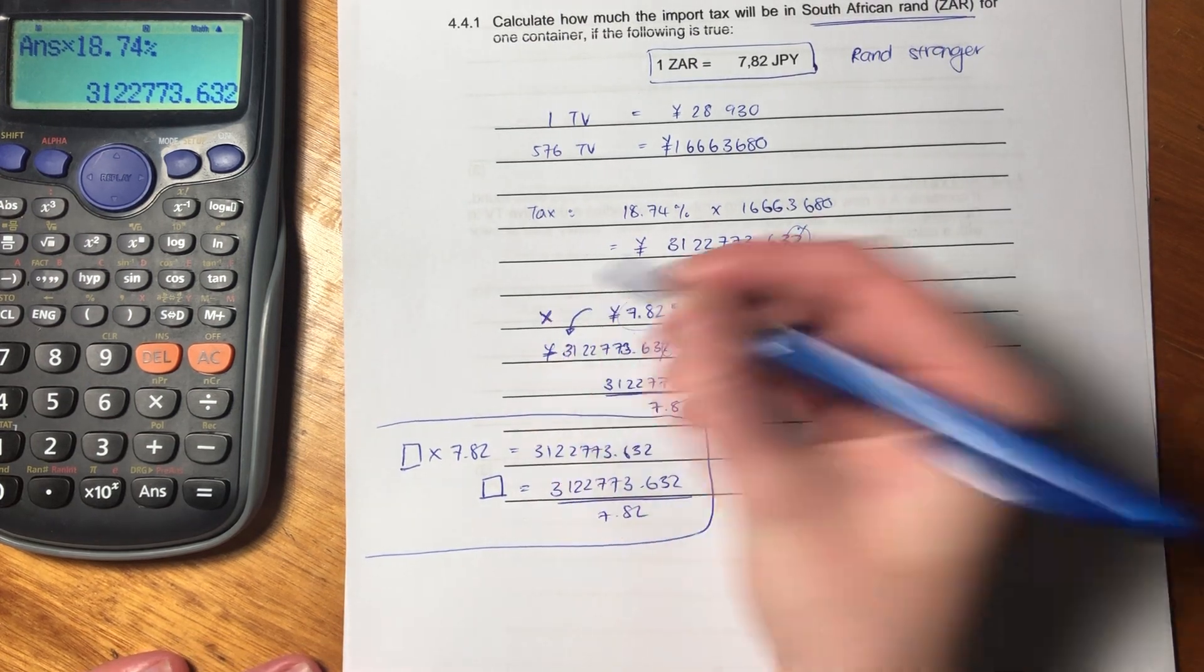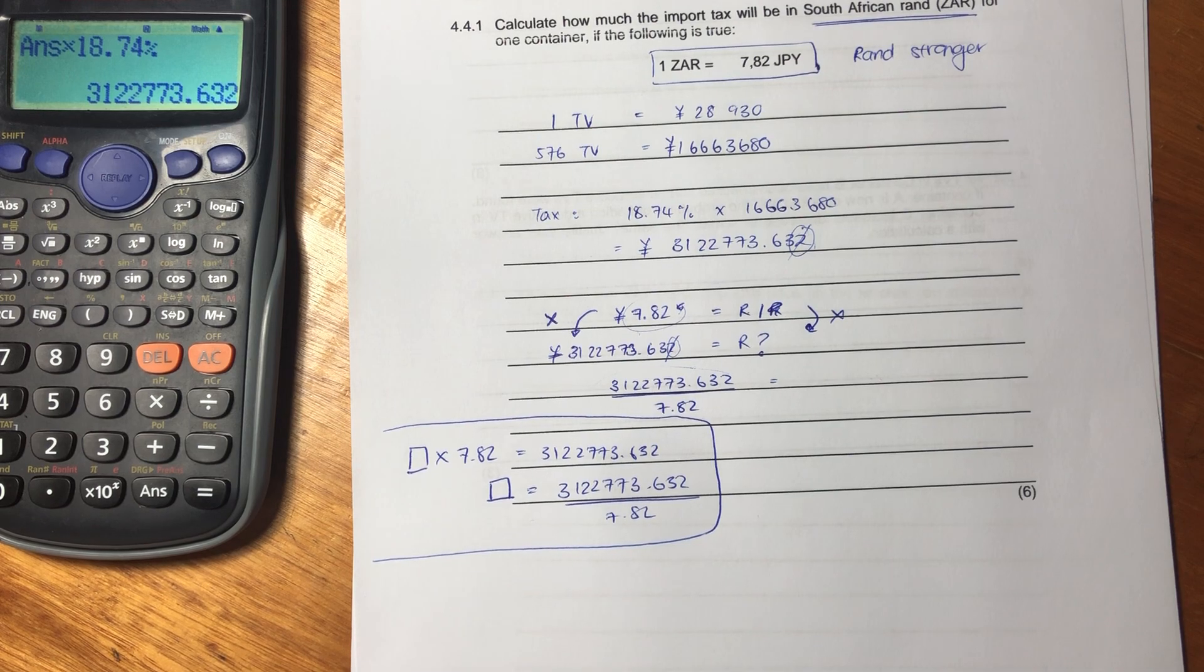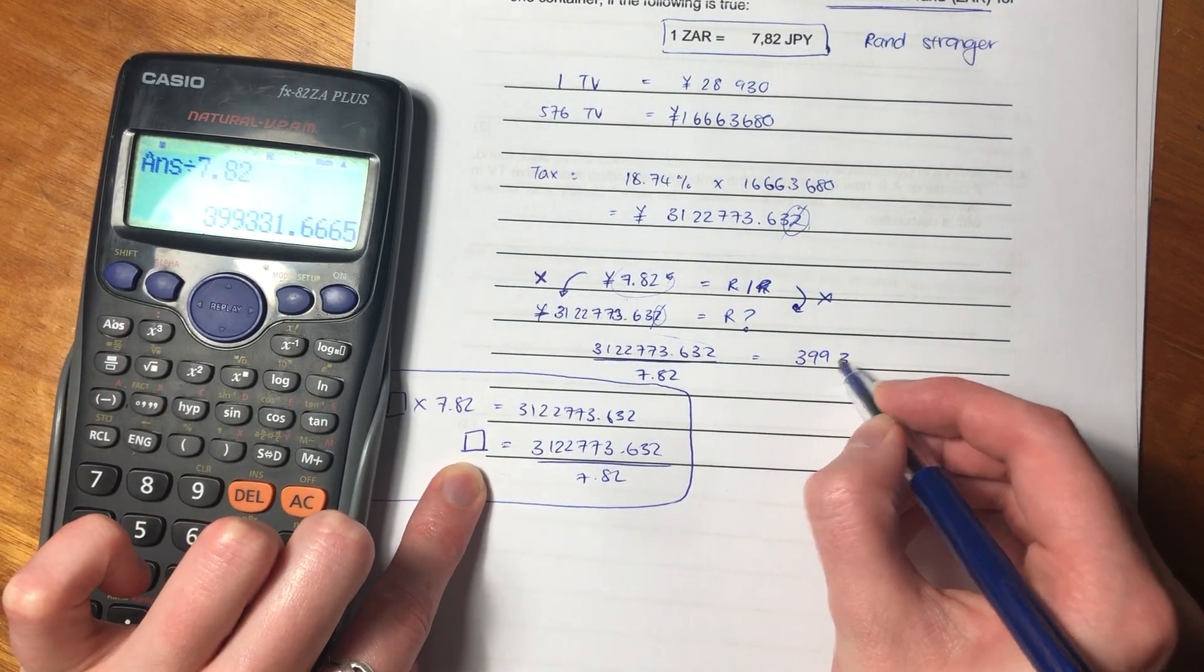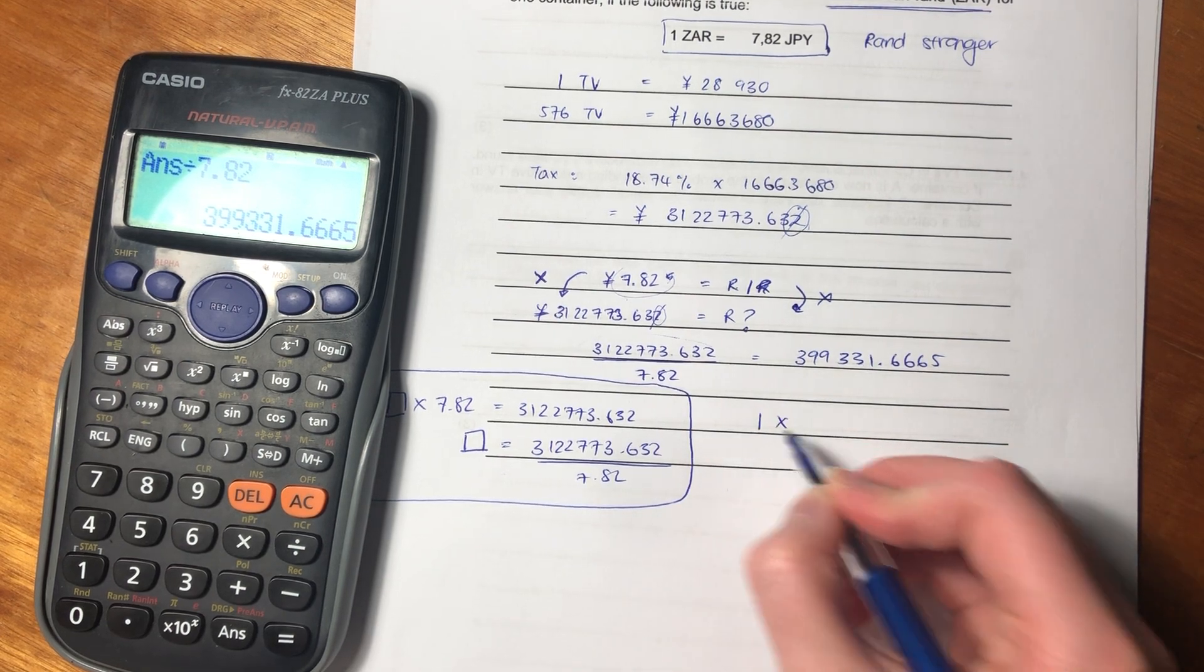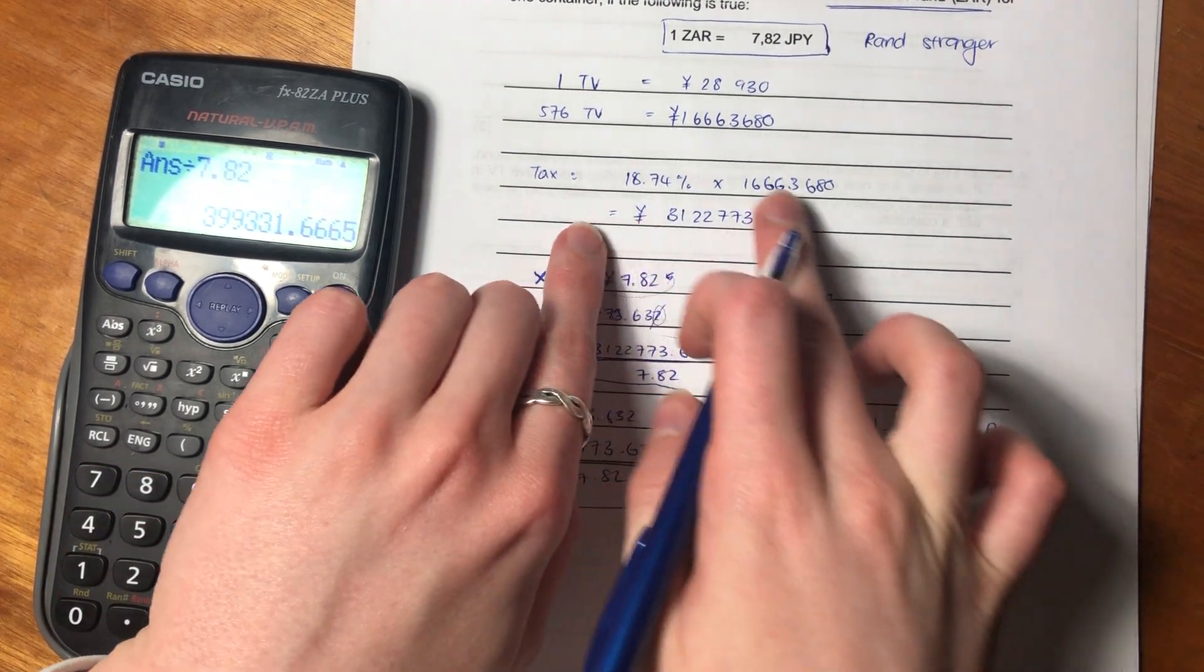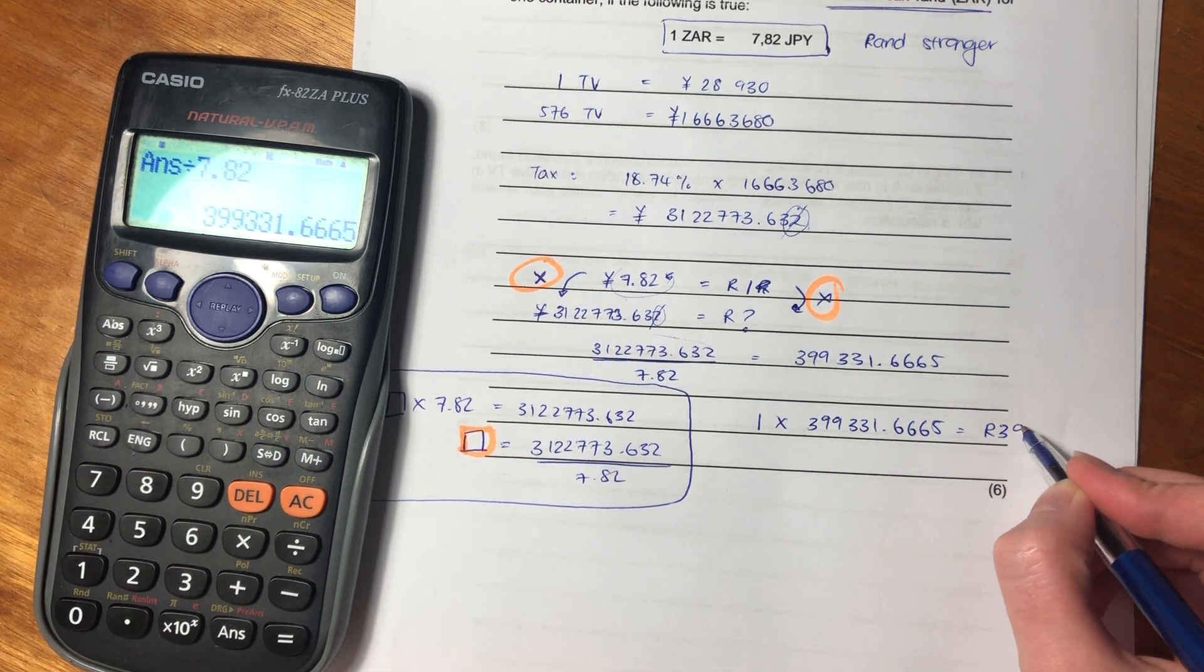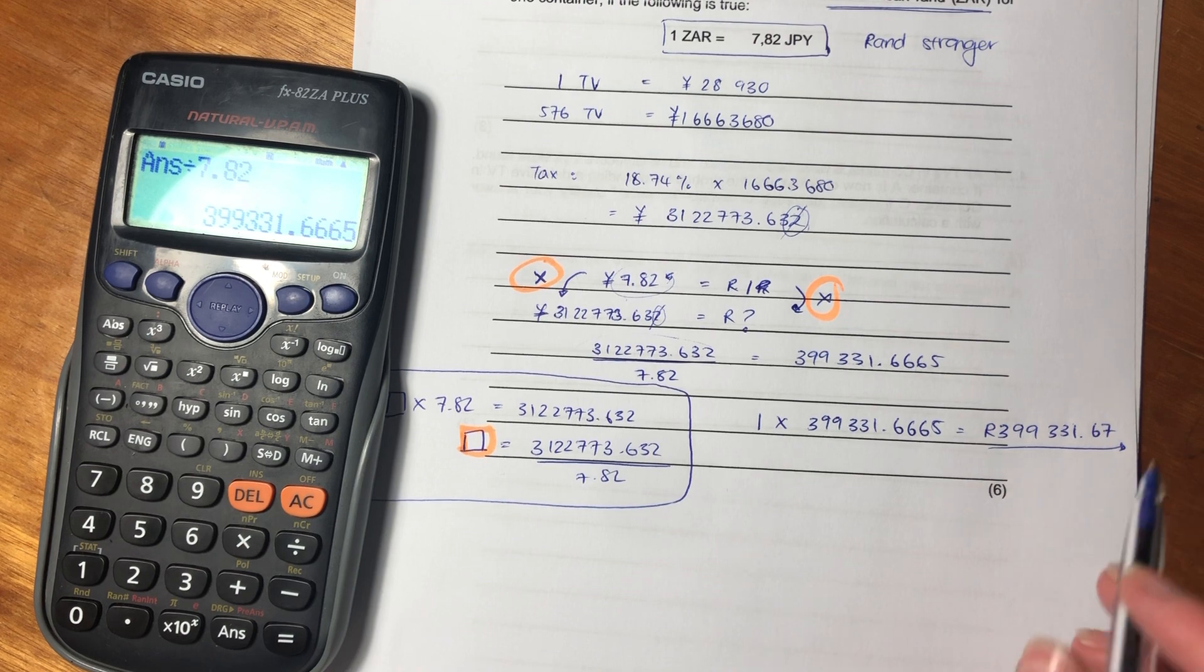Now, remember, whatever I multiply by on the one side of a ratio, I have to do on the other side. So if we find this number, then we just have to multiply it by one, and that will give us the number of rands. So we're very close to the end of this question, which is fabulous. So let's take that number that we have in our calculator, and let's divide it by 7.82. So we know that the box that I've spoken about is 399331.6665. But now all we need to say is we say one times the 399331.6665. And that gives us the number of rands that this amount of tax is going to be. So we know that that's going to be 399331.67. Remember, when we're giving a final answer and we're putting in a currency, we round off to two decimal places.